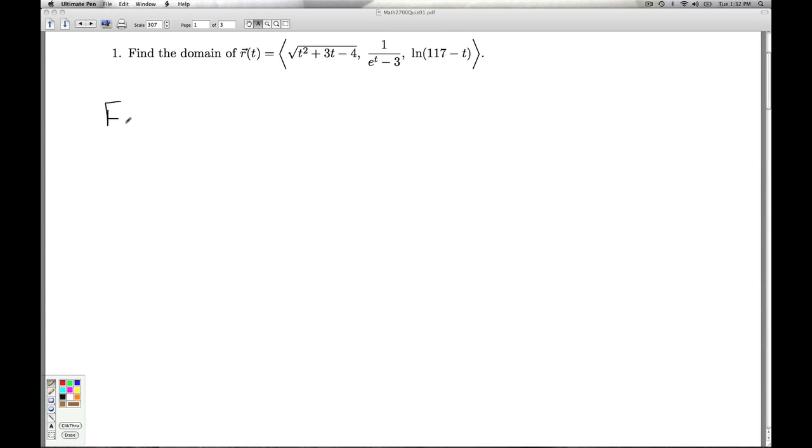So now for our final answer. We look at the domain of each of these components, and we have to take their intersection or overlap. In number 1, it was everything from negative infinity up to and including negative 4, along with everything from 1 up to infinity, including the 1. The second example, we have negative infinity up to natural log of 3, union the natural log of 3 to infinity. And finally, in the third component, we have everything up to, but not including, 117.